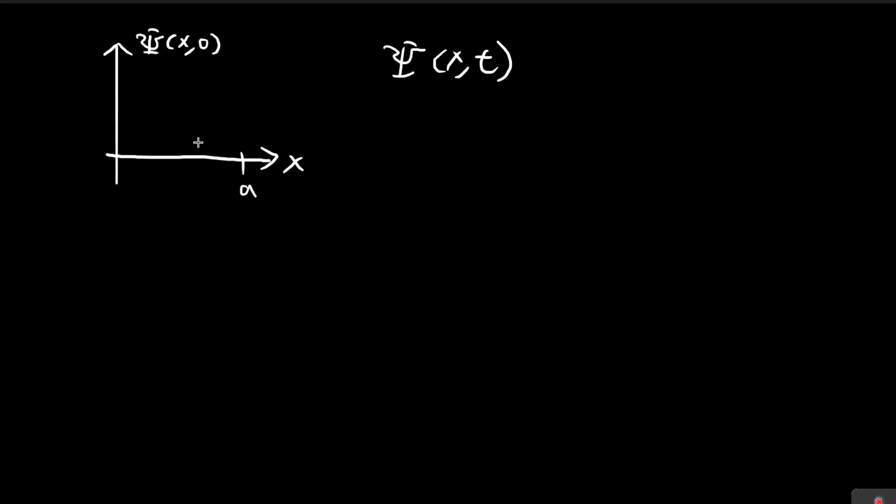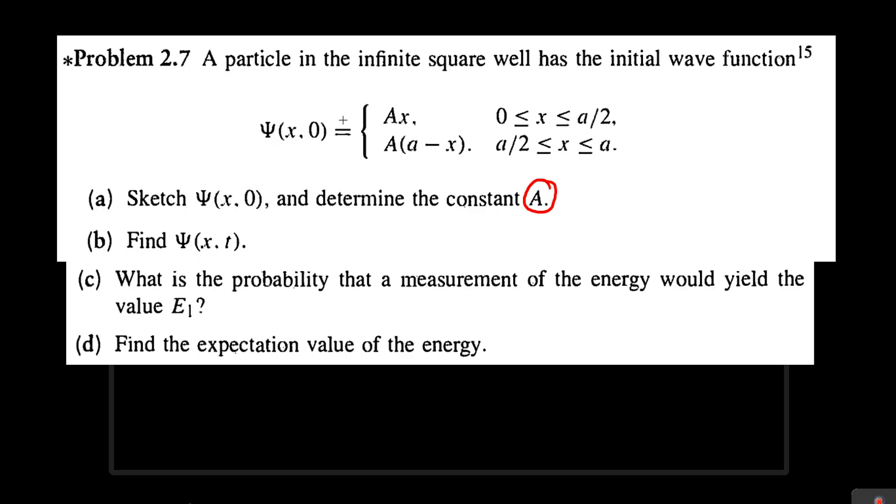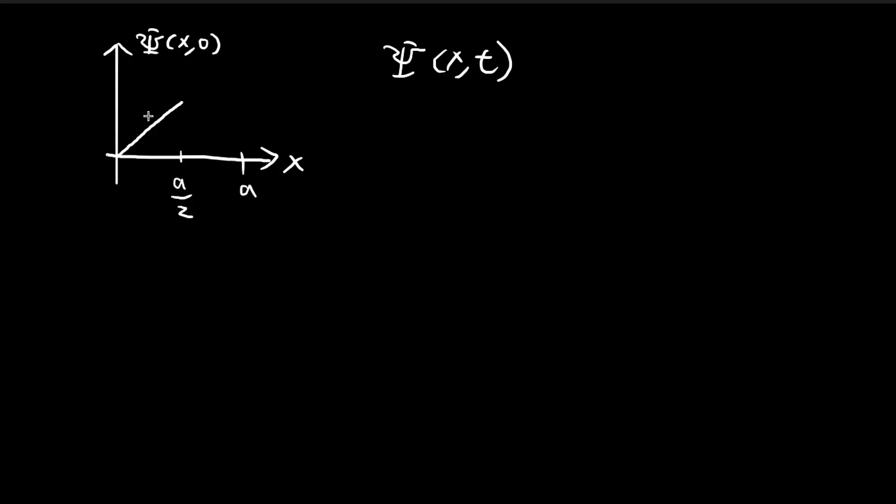From 0 to a over 2, so a over 2 is right at the middle, this function is going to be a straight line that goes straight up. So this section here will be capital A times x.